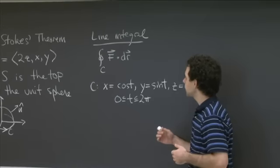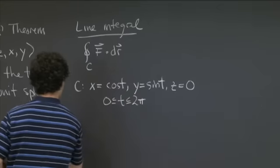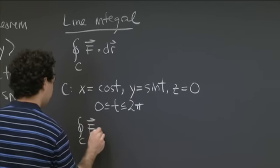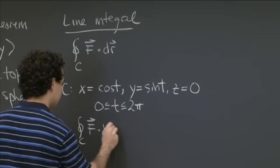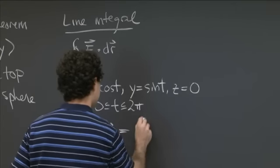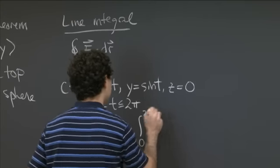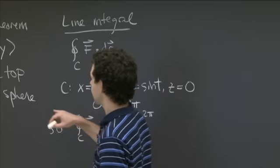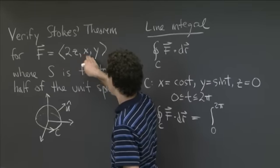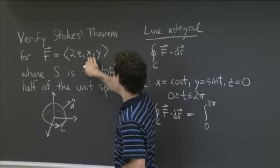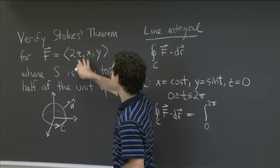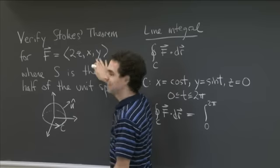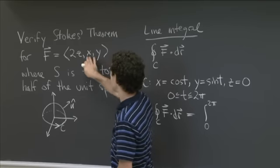Let's put that in. The integral over C of F·dr equals the integral from 0 to 2π. We have F = (2z, x, y), so it's 2z dx + x dy + y dz. But z is 0 on this whole circle, so that piece just dies. And dz is also 0, so that piece dies too. We're just left with x dy.